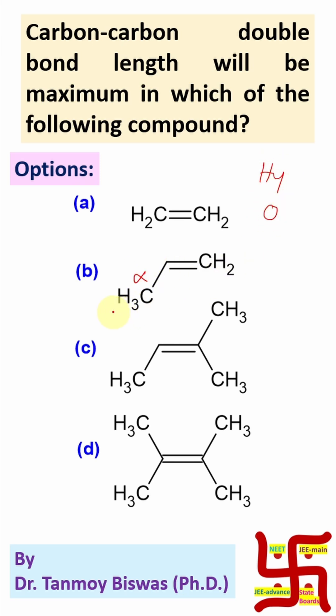Here, this is one alpha carbon and three hyperconjugation because three alpha hydrogen. Similarly, here, here and here. So, total nine hyperconjugation possible because nine alpha hydrogen.